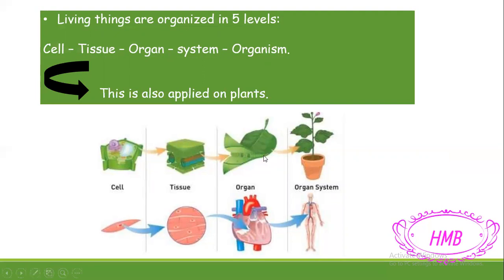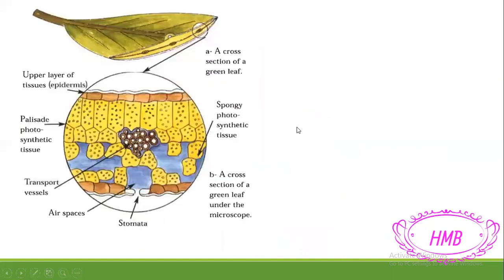Then many organs together — such as the leaves, the stem, the roots — give me an organ system. And finally, many organ systems give me one complete living thing. This is the same for the plant: plants start their life as one cell, then tissue, then organ, then organ system, and finally a complete plant.